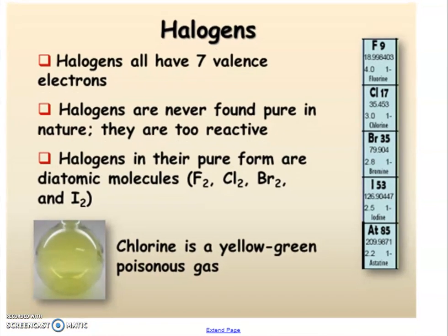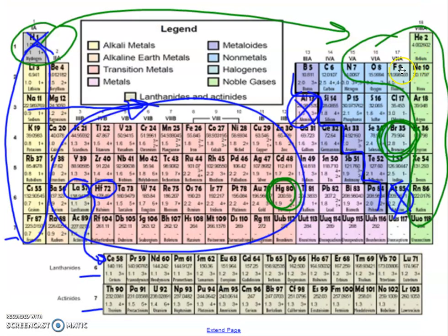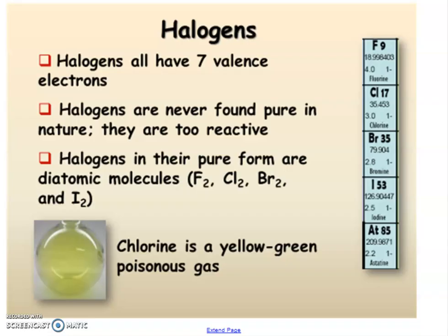Now we're going to look at the second last group on the periodic table, which is group 17. Group 17 is this group right here, and it's a non-metal group called the halogens. Sometimes we can call them chemical families also.